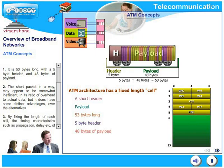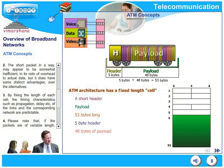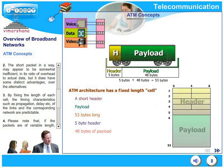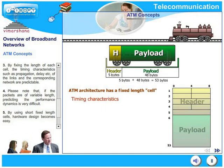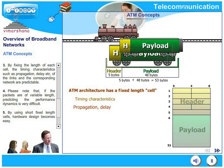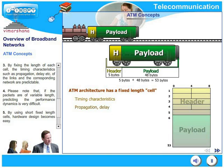The short packet may appear to be somewhat inefficient in its ratio of overhead to actual data, but it definitely has some distinct advantages over other alternatives. By fixing the length of each cell, the timing characteristics such as propagation delay and so on of these links and the corresponding network are predictable.